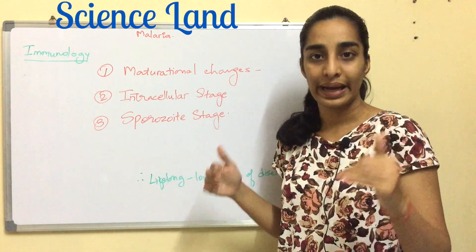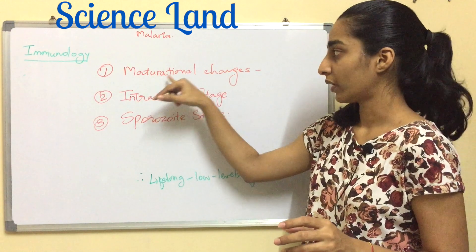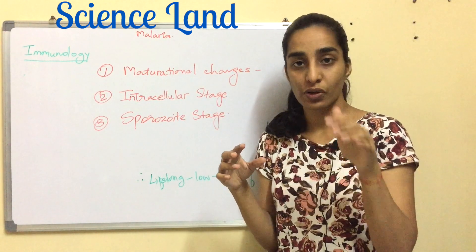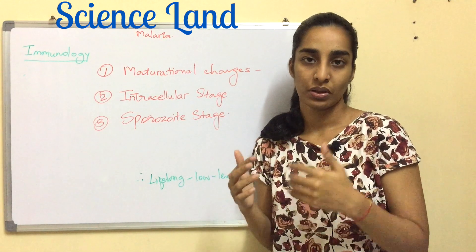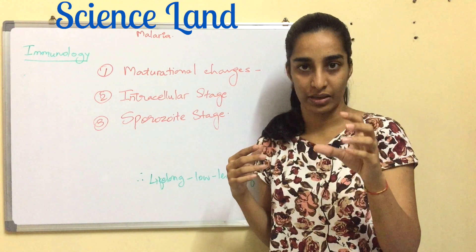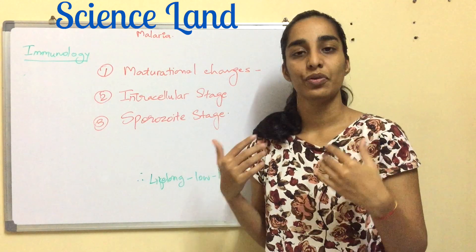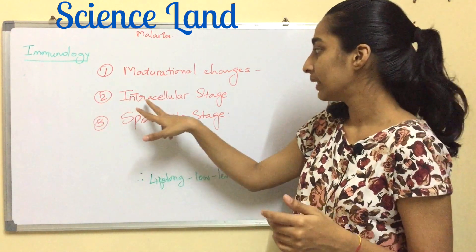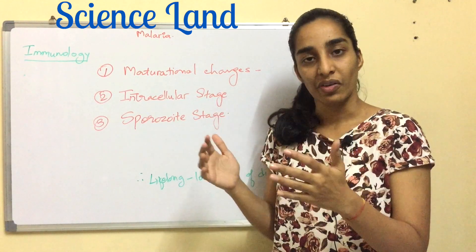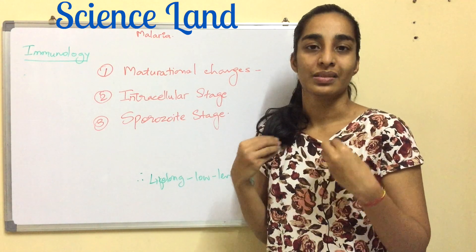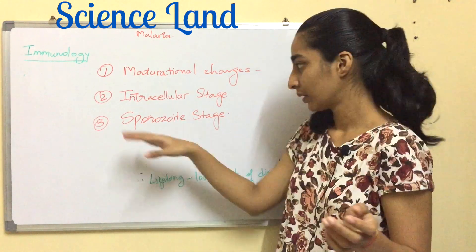There are three main reasons why people in malarial endemic regions carry low levels of the disease lifelong. The first is maturational changes: the sporozoite's CS antigen undergoes structural changes during maturation, so the immune system treats it as a new antigen each time and is not activated. The second is the intracellular stage: once sporozoites enter the liver, it becomes very difficult for the immune system to attack an antigen inside its own body cells.